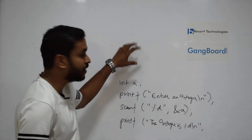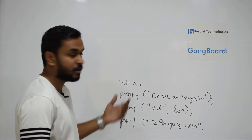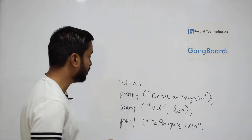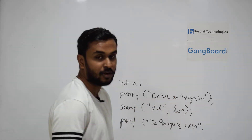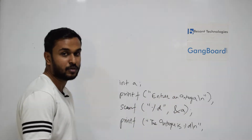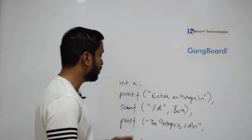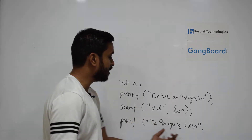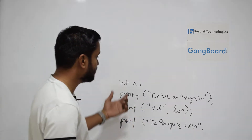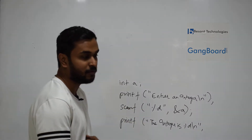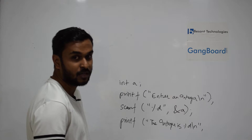We can define the main function. Then we can define the integer. And then we can enter an integer from the user terminal. So input is entered, and then finally we can print the integer. We can print the input, then write a new line. So this is C.